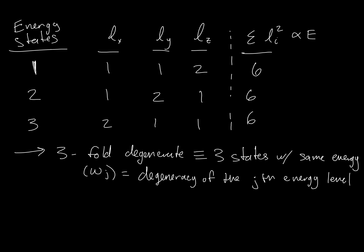So what we call this particular system is we call this three-fold degenerate, which is defined as there are three states with the same energy. We usually denote this as omega j. So this is the degeneracy of the j energy level.